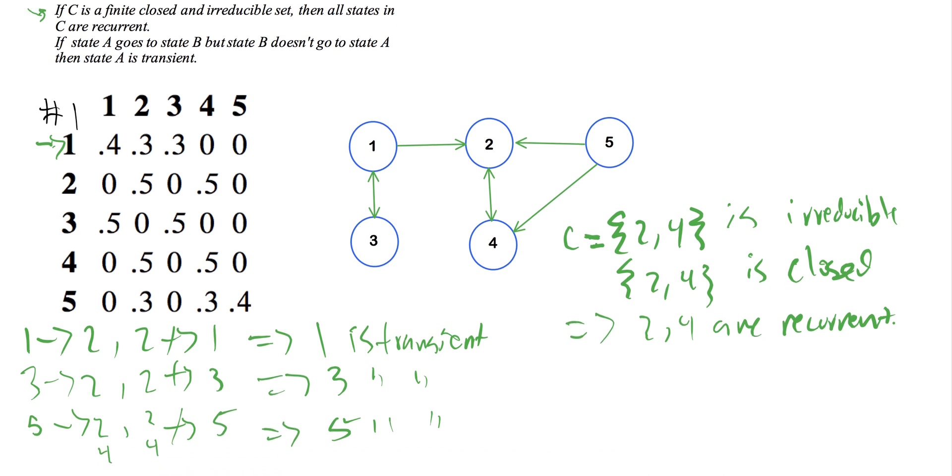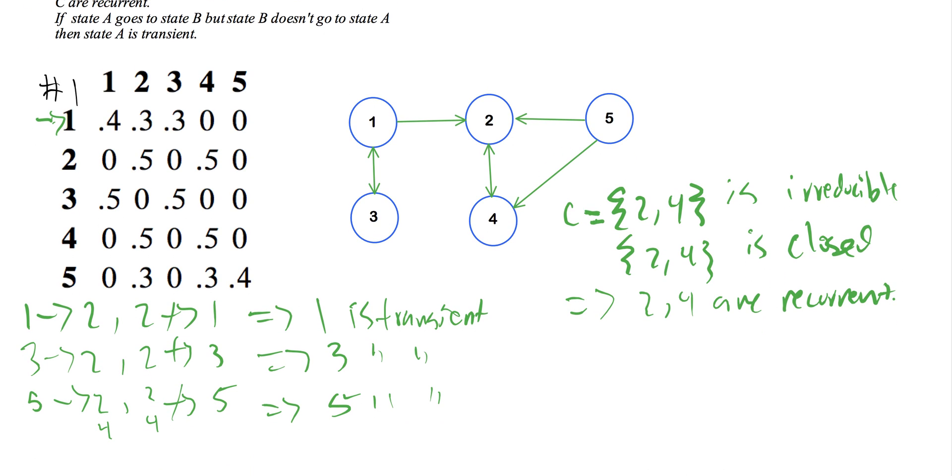So we've gone through states one through five. We've noted if they're transient and recurrent. We've also found the set that is irreducible and closed.